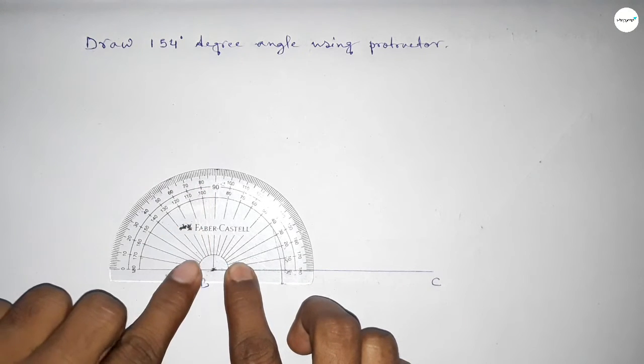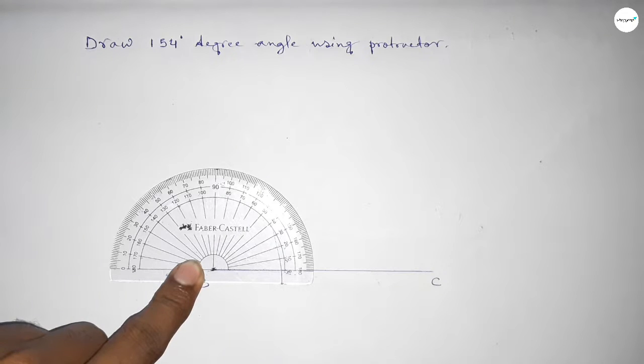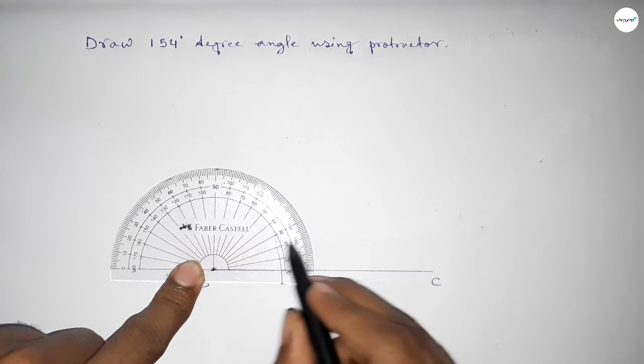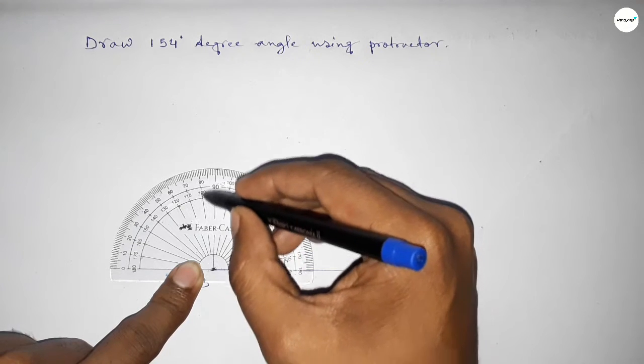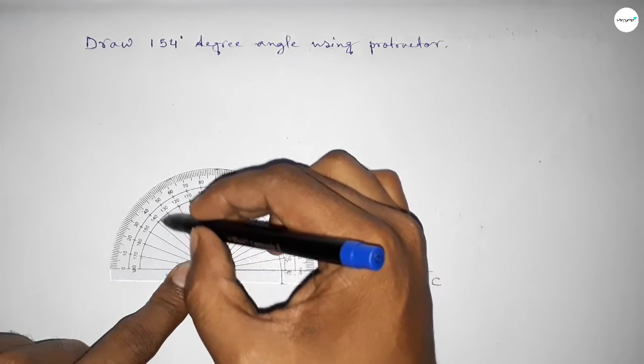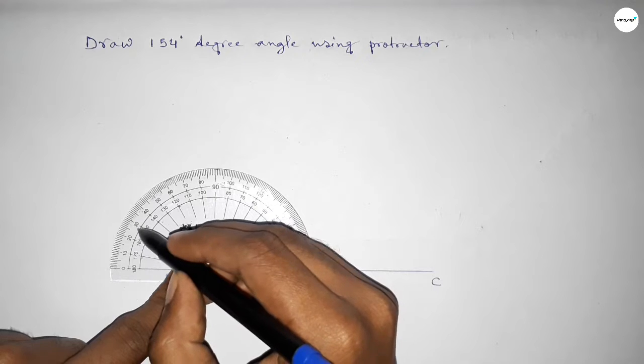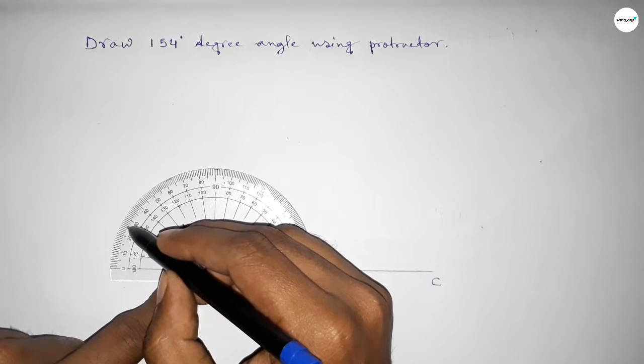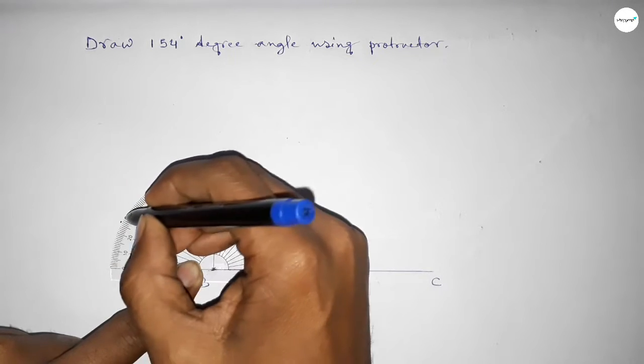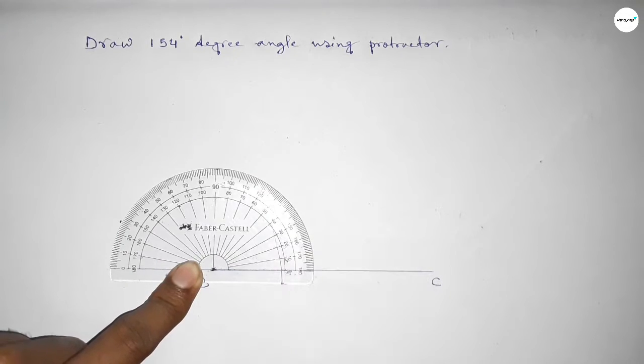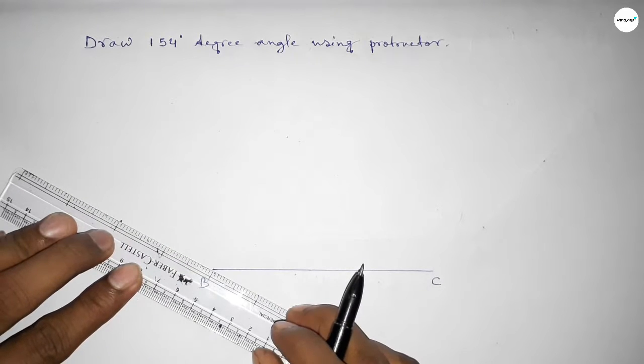This is the starting angle: 0, 10, 20, 30, 40, 50, 60, 70, 80, 90, 100, 110, 120, 130, 140, 150, and this is 151, 152, 153, 154. So this is 154 degrees. Now join this side to get the 154 degree angle.